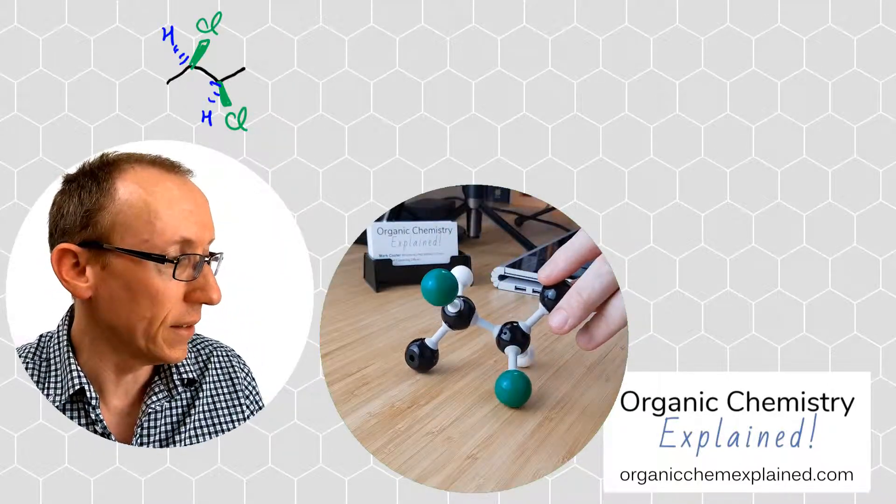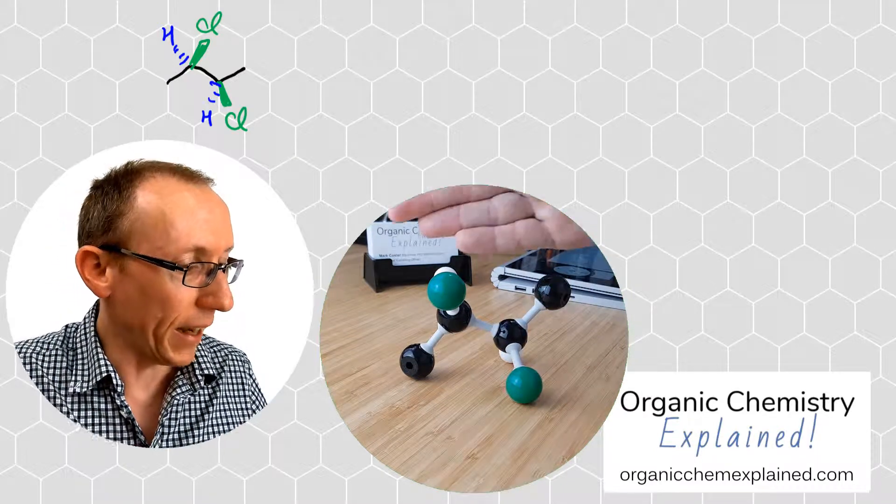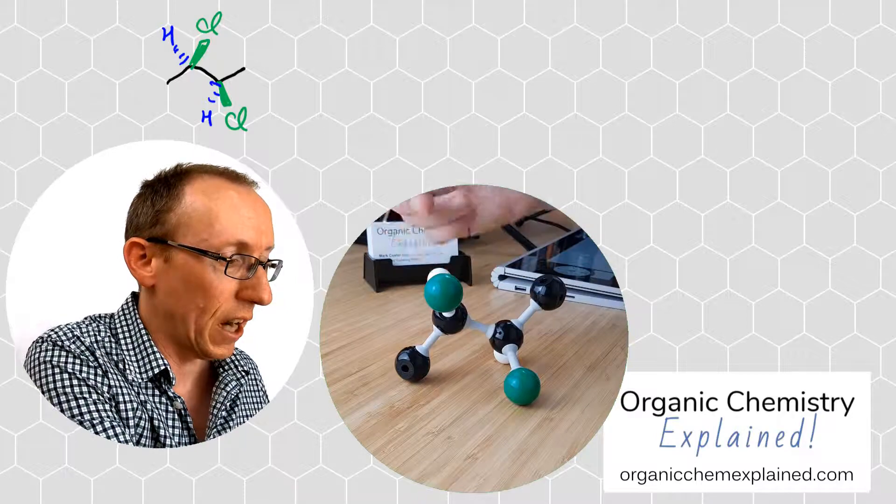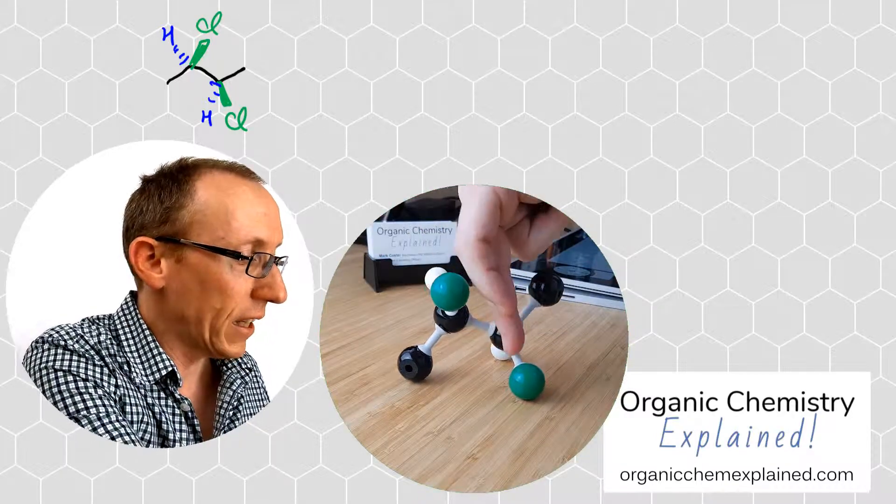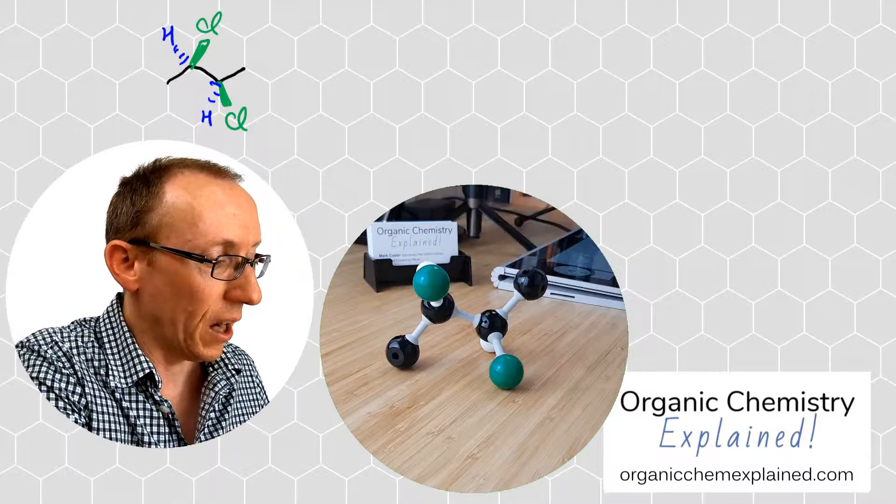What I've drawn here is the same as what's in this model. We've got the plane of the paper going through each of the four carbon atoms, then the chlorines are coming towards you as the viewer and the hydrogen atoms are going away.